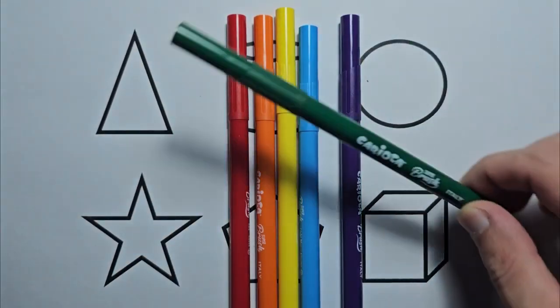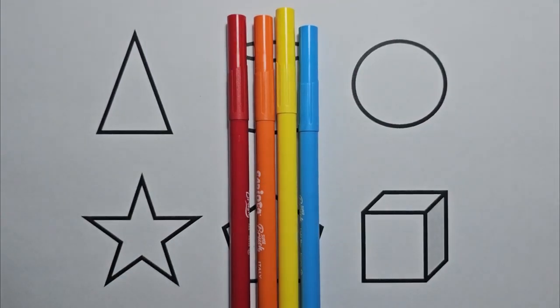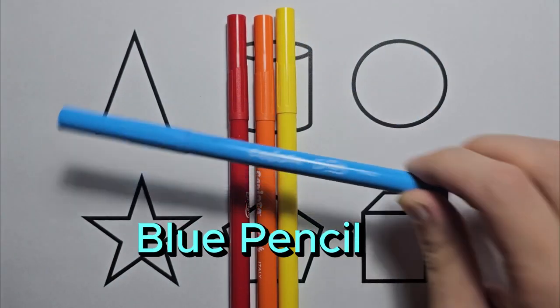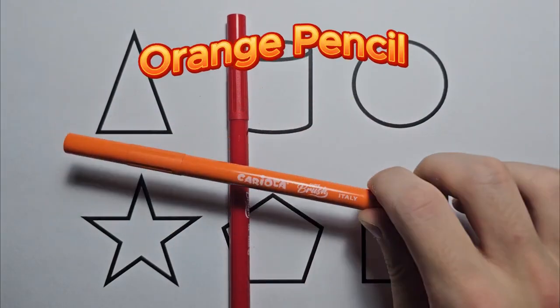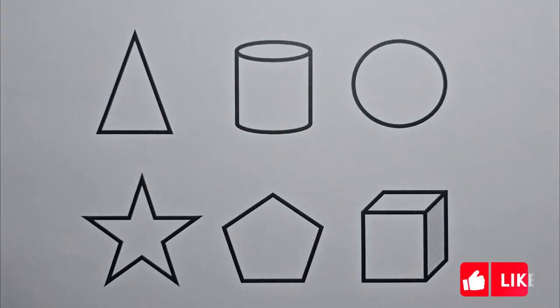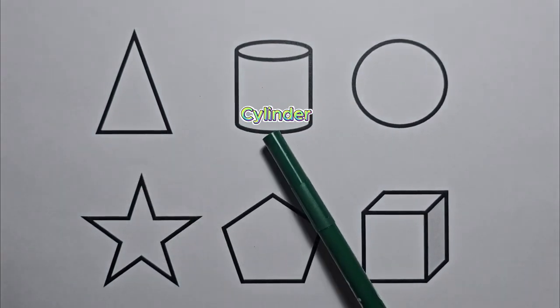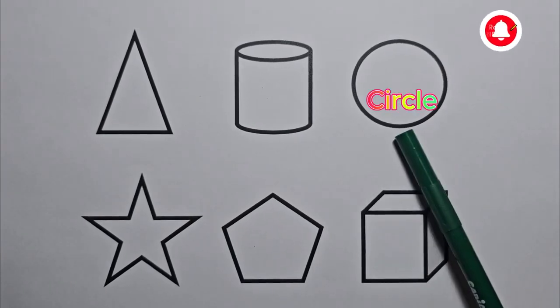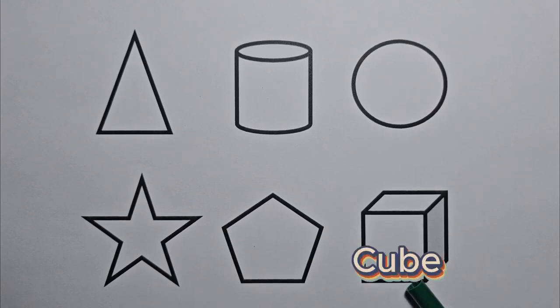Green pencil, purple pencil, blue pencil, yellow pencil, orange pencil, red pencil. Triangle, cylinder, circle, star, pentagon, cube.